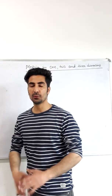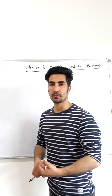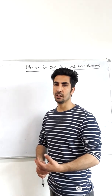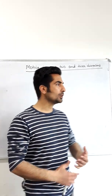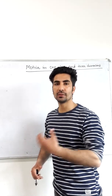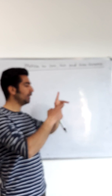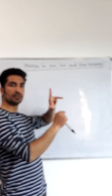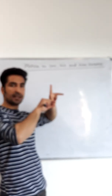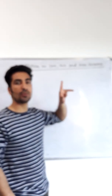Before discussing motion in one, two, and three dimensions, we need to understand what a rectangular coordinate system is. A rectangular coordinate system is a set of three coordinate axes which are inclined to each other at an angle of 90 degrees. These are called the x-axis, y-axis, and z-axis, and together they form the rectangular coordinate system.